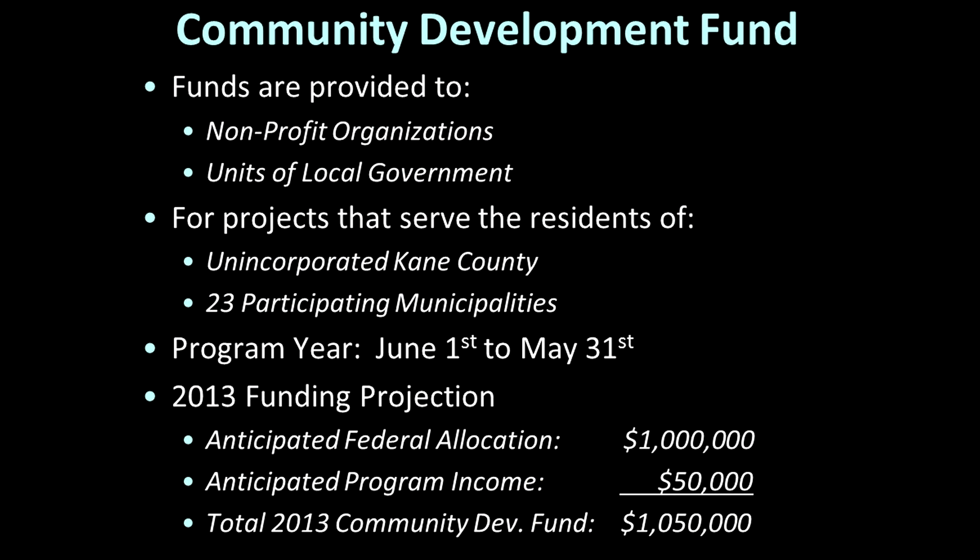The county provides community development funding to two types of entities. Applicants must either be incorporated as 501c3 nonprofit organizations or be a unit of local government, and all projects must serve or benefit residents within the county's community development program area. This area includes all of unincorporated Kane County, as well as the 23 municipalities that participate in the county's program. It's important to note that three Kane County communities — Aurora, Elgin, and Hoffman Estates — have their own programs. If your project is located in any one of these communities, we would encourage you to seek federal community development funding first from those municipalities.